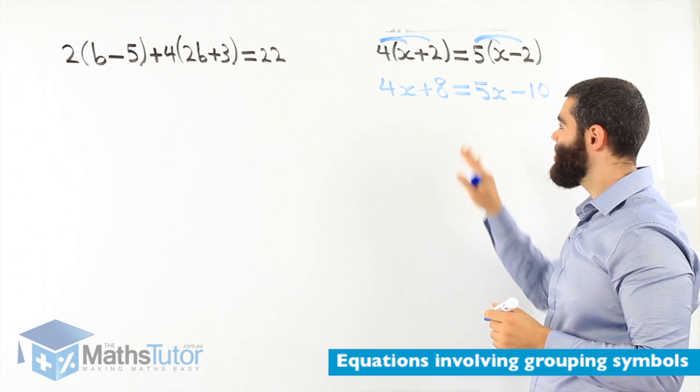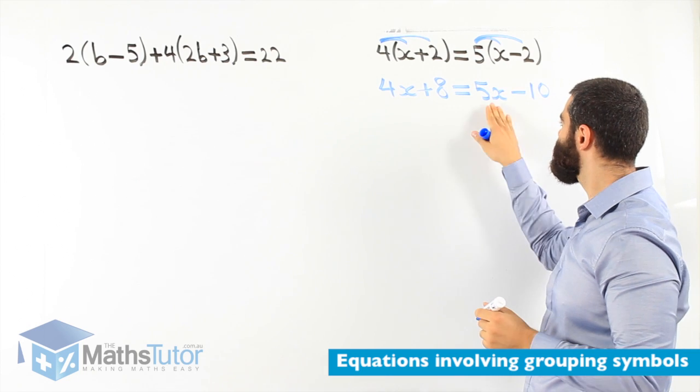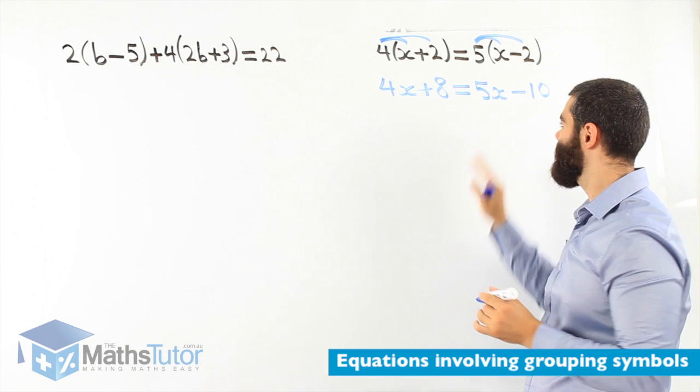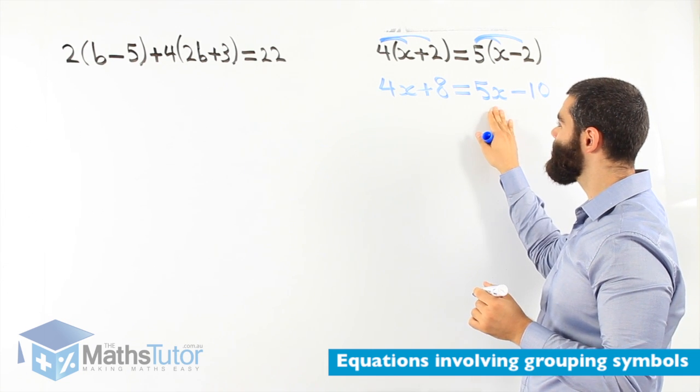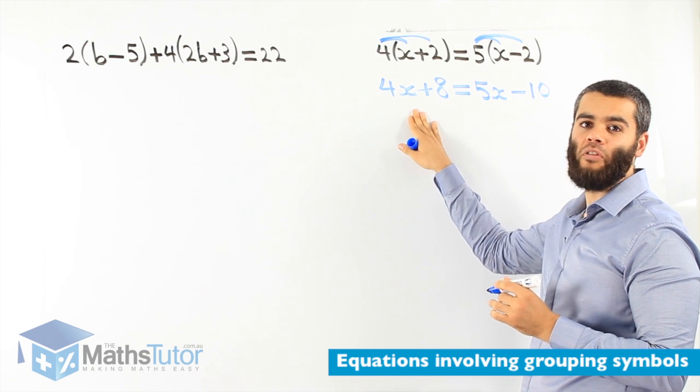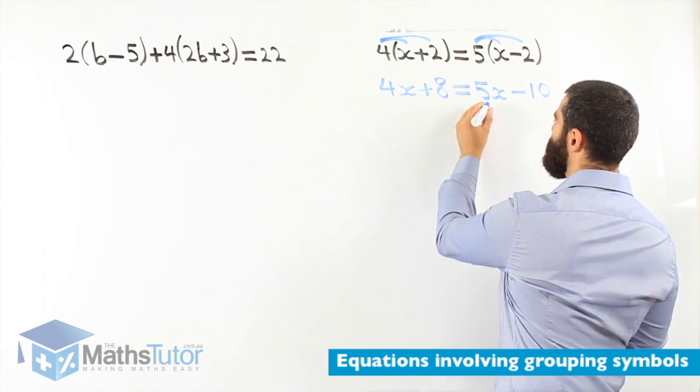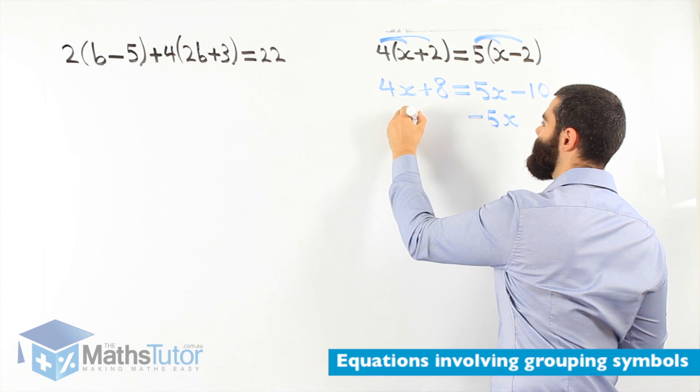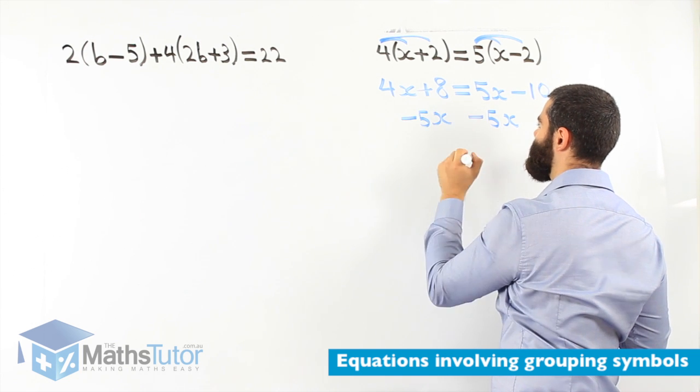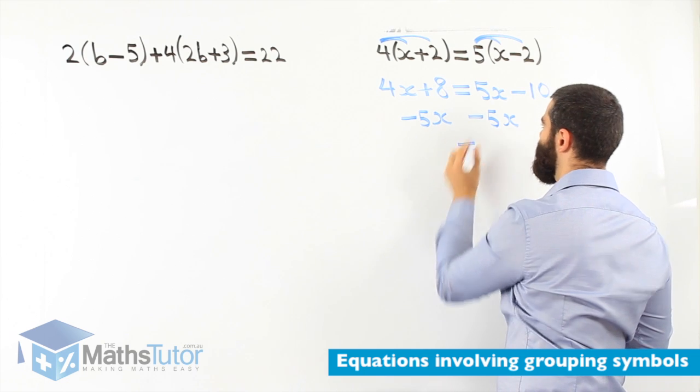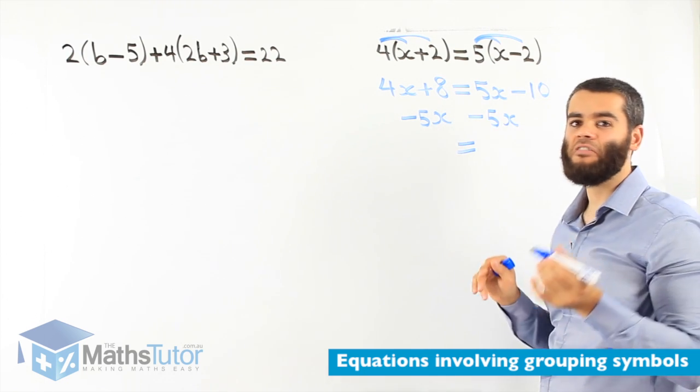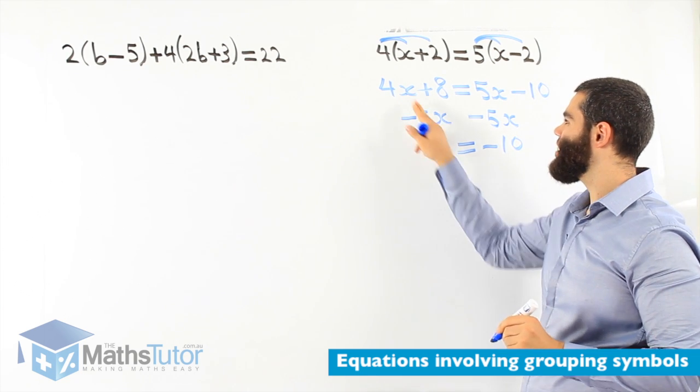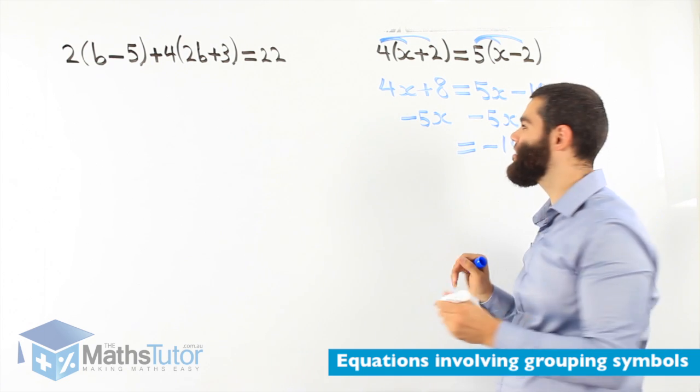4x plus 8 equals 5x minus 10. What do you notice? This is an equation with pronumerals on both sides. So, what do we do? We have to get rid of the pronumerals on this side so we can keep the pronumerals on the left all the time. So, 5x minus 5x minus 5x on this side too. So, we're going to have 5x take away 5x is gone. We're left with negative 10 and 4x minus 5x is negative 1x.